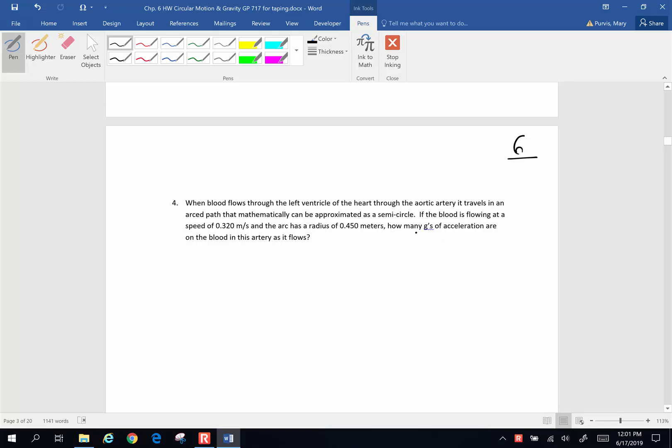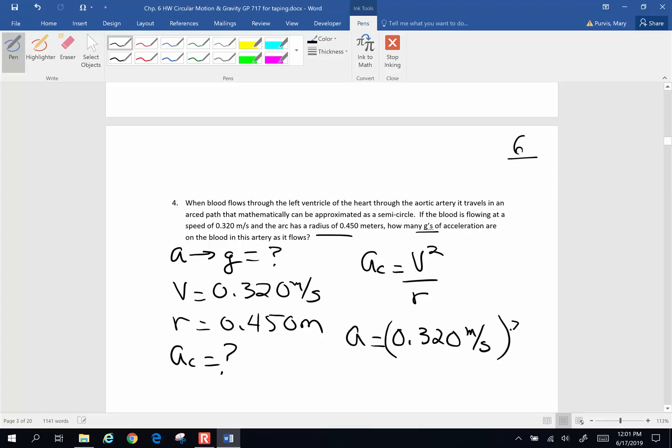So if we're looking for g's, you are looking for acceleration. And then from acceleration, we can convert that to g's. So acceleration is our first step, the first thing we want to calculate. Now we know that the velocity is 0.320 meters per second. We know the radius is 0.450 meters. And we are looking for, firstly, the centripetal acceleration. So with v and r, we are going to choose the centripetal acceleration equation of v squared over r, which is going to be 0.320 meters per second quantity squared, divided by our radius 0.450 meters.